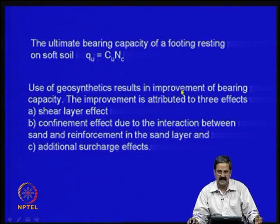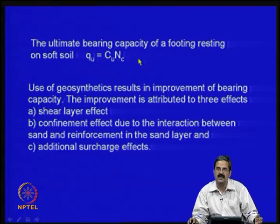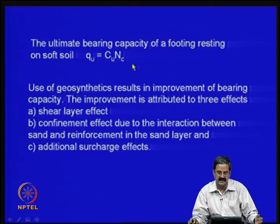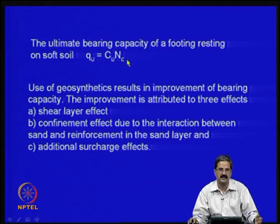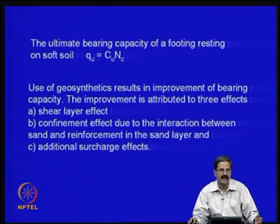The bearing capacity of soft soil is given by C_u × N_c, where C_u is the undrained cohesion and N_c is the cohesion factor in the bearing capacity equation. In the bearing capacity equation, we have three terms — N_c, N_q, and N_gamma — which are the bearing capacity factors.